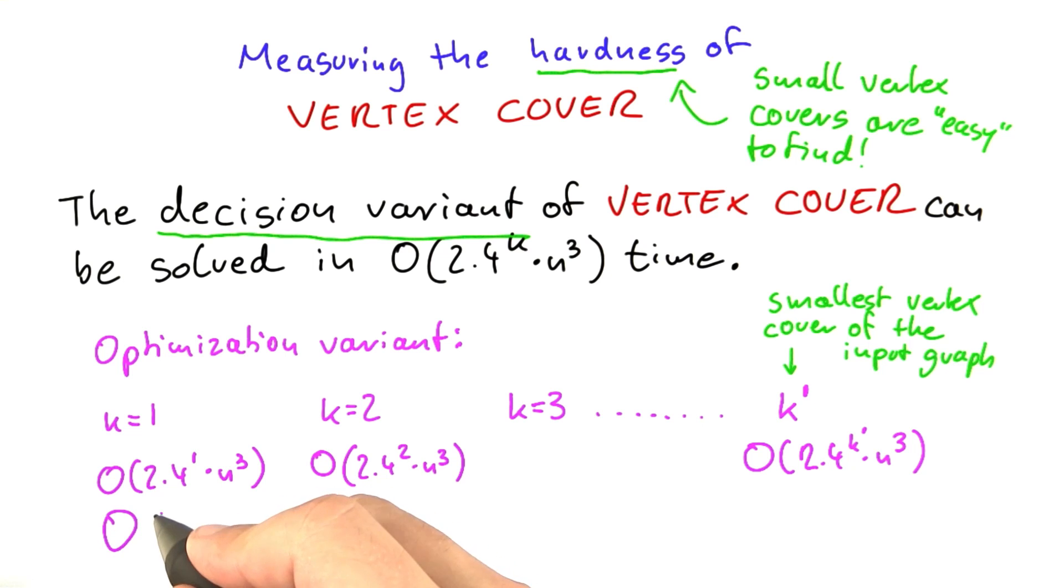Well, you need to know a bit of discrete mathematics for this. But the running time overall is 2.4^1 + 2.4^2 and so on, until you hit 2.4^k' × n^3.